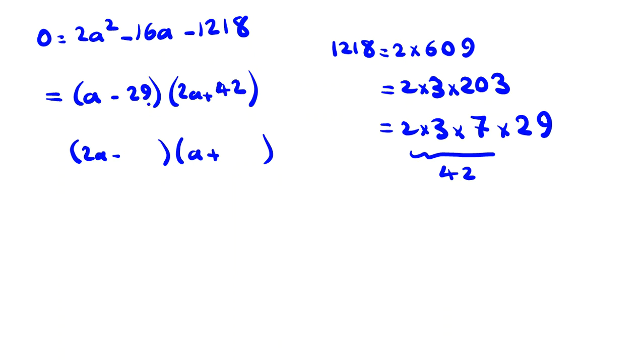It will be 42 minus 58, and it will be negative 16. Okay, so it is okay. Now we conclude that a is 29 or a is negative 21 for this case.